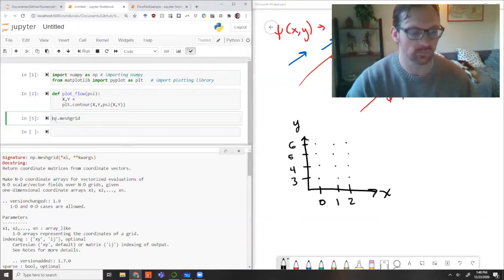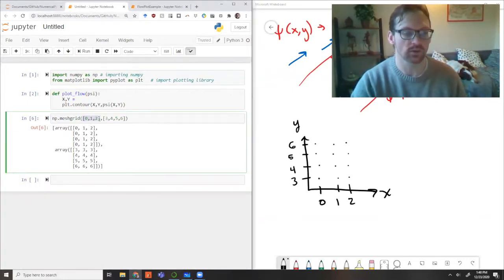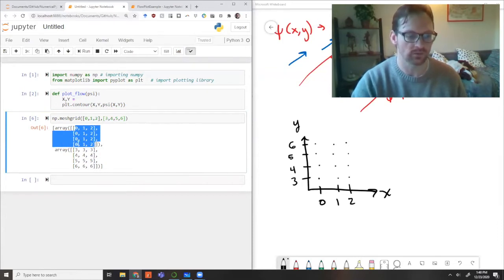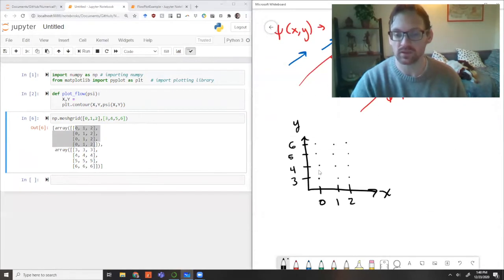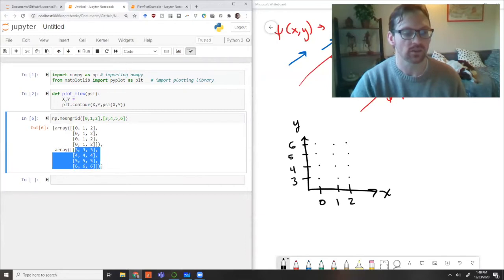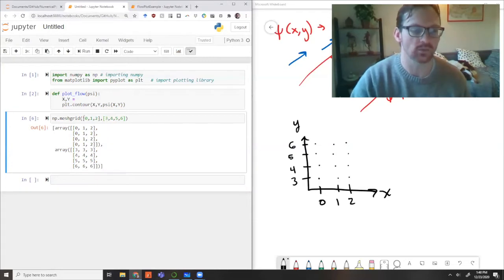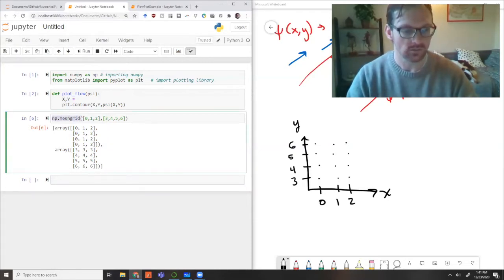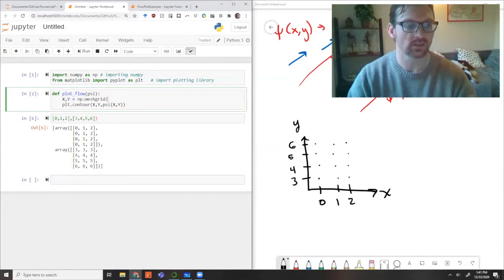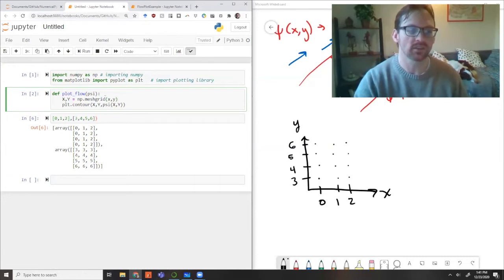Let's try this simple example. Passing in 0, 1, 2 for x and 3, 4, 5, 6 for y, the output is a matrix of x values, all of which are 0, 1, or 2, and then a matrix of y values which are 3, 4, 5, 6 in the opposite direction. It's done exactly what we want. This looks pretty good.